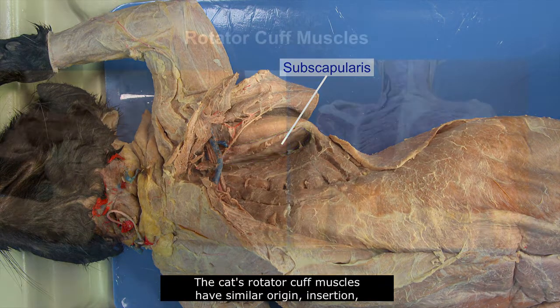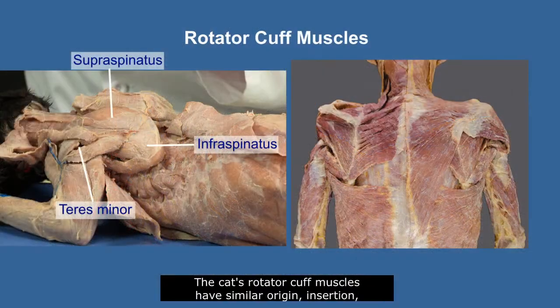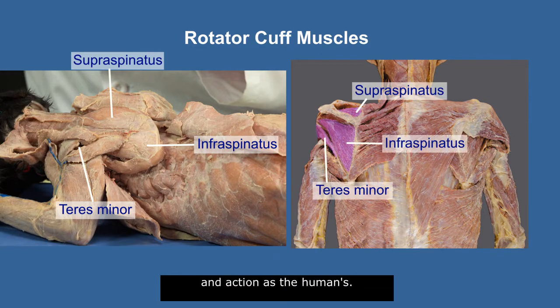The cat's rotator cuff muscles have similar origin, insertion, and action as in humans.